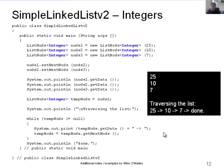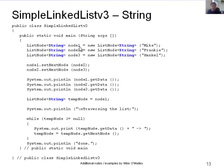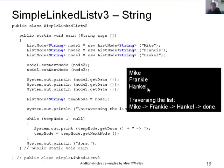Now with strings: ListNode<String> node1, node2, node3 — storing Mike, Frankie, and Henkel at each node. We define tempNode as ListNode<String> as well. Everything else stays the same. We see Mike, Frankie, and Henkel with getData, and when traversing the list we see Mike, Frankie, Henkel, then done. We could easily add more nodes and join them together.